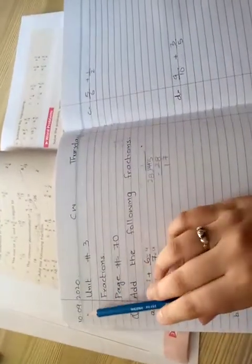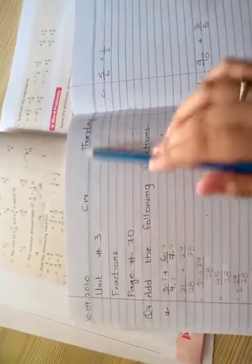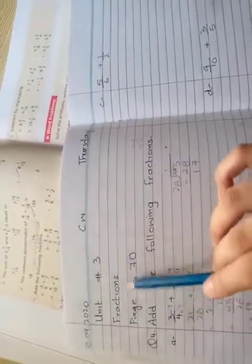First of all, you will write date: 10-9-2020, classwork and Thursday, unit number 3 Fractions, page number 70.